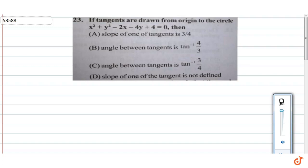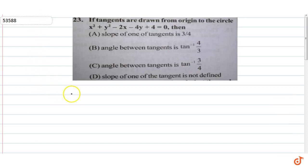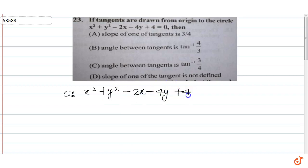If tangents are drawn from the origin to the circle x² + y² - 2x - 4y + 4 = 0, then what will be the slope of the tangent? So first of all, write the equation of the circle. The given equation is x² + y² - 2x - 4y + 4 = 0.